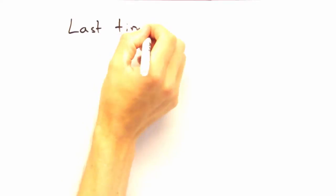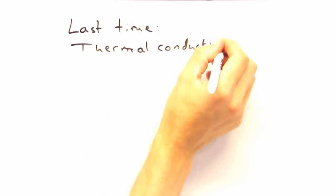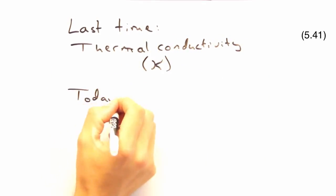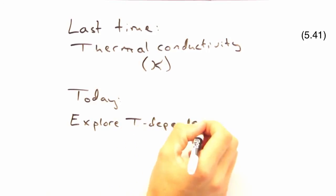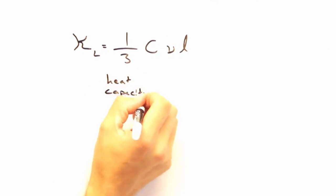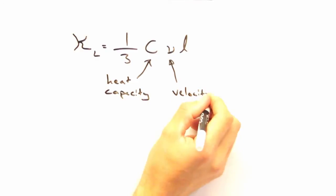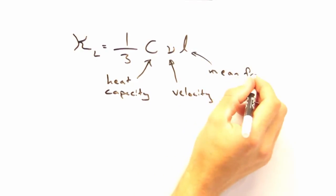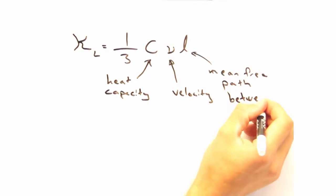Okay, last time we developed an expression for thermal conductivity, and like many properties, we're going to find today that it depends strongly on temperature. Recall that last time we developed an expression for thermal conductivity as one-third CvL, where C is our heat capacity, v is the group velocity of our phonons, and L is the mean free path between collisions. We'll look at the temperature dependence of each of these, and then at the end, bring it all together.